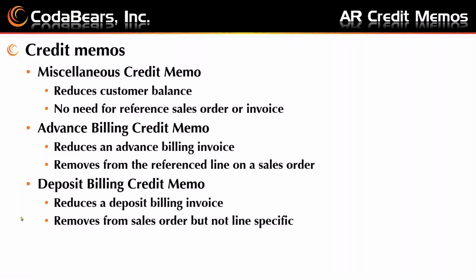The second kind of credit memo is an advanced billing credit memo. This reduces an advanced billing invoice and it removes it from the reference line on a sales order. When talking about advanced billing and deposit billing, we need to make sure the final invoice hasn't been cut. If the product has been shipped and pulled into an invoice batch, you will no longer be able to do an advanced billing credit memo.